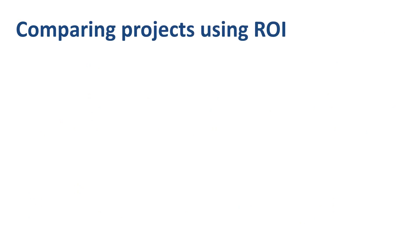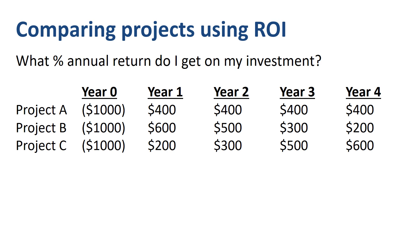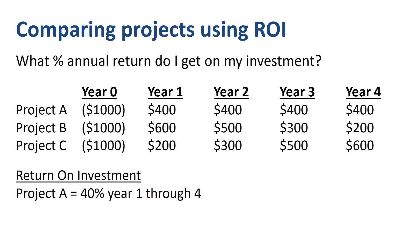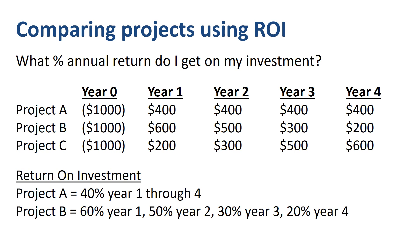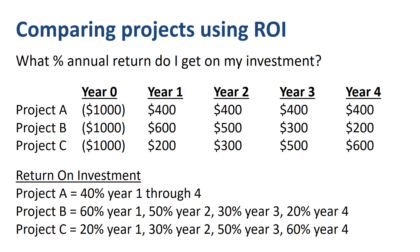We could compare the same three projects — A, B, and C — using return on investment. Remember that for ROI, the central question is: what percentage annual return do I get on my investment? The answer for project A is 40% per year from year 1 through year 4. For project B, the answer would be 60% in year 1, going down to 20% in year 4. For project C, the opposite: 20% in year 1, going up to 60% in year 4. For most people, it is not intuitively clear which project to choose. Should I go for the stable returns of project A, the decreasing ROI of project B, or the increasing ROI of project C? ROI doesn't seem to be a great decision tool here, as it doesn't really provide a clear answer.